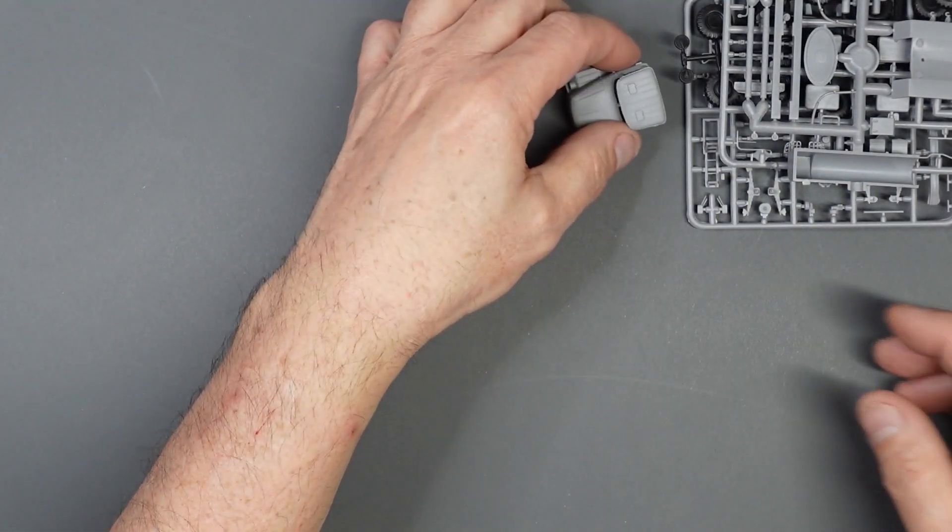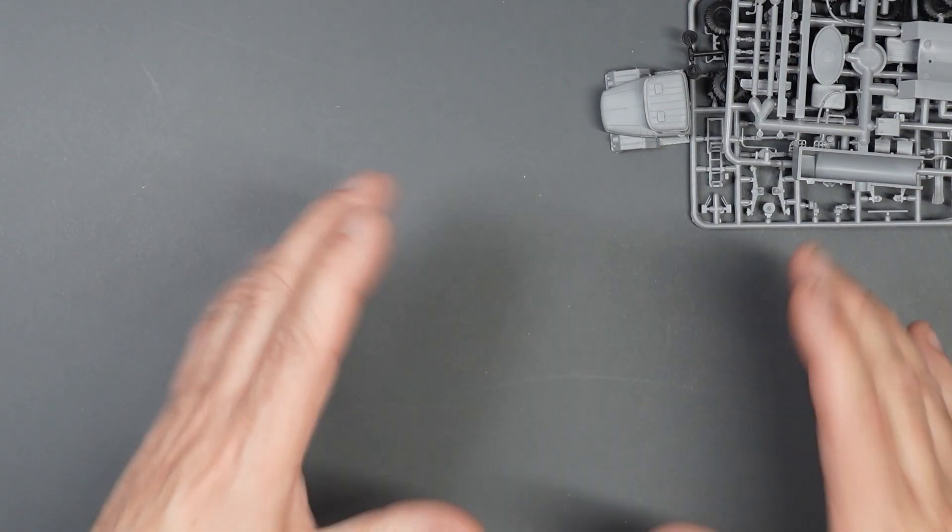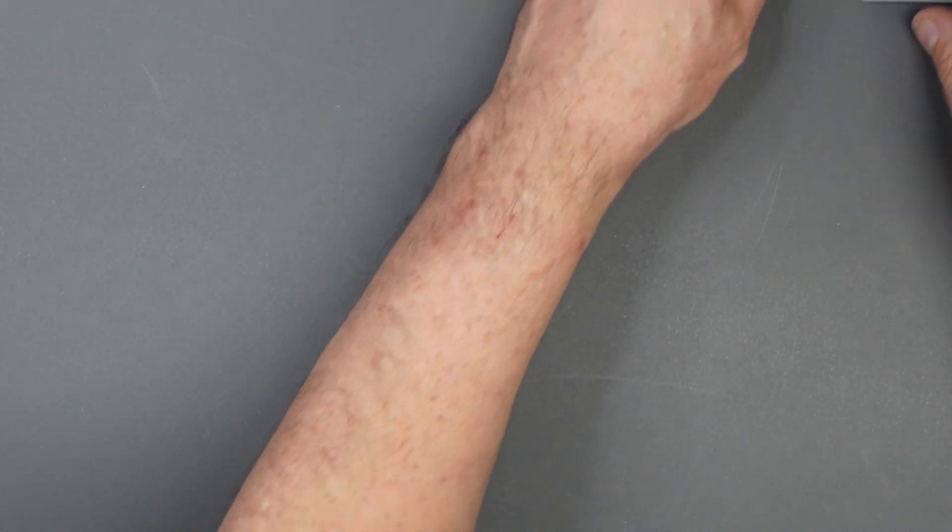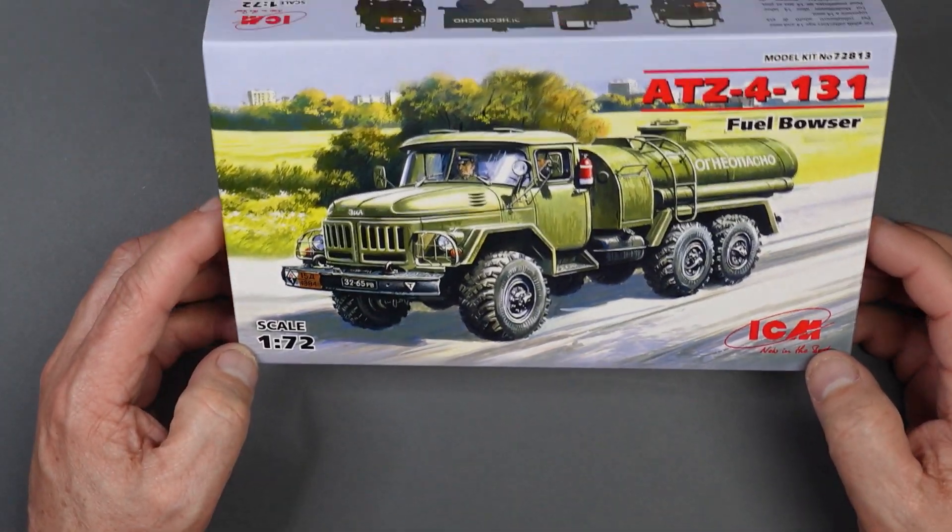And as I've said a million times before, having these trucks next to your aircraft in a little display, you don't have to do a diorama, but just have it plonked on a shelf, parked next to it. It just gives the aircraft a sense of scale. So that is the ICM 1:72nd scale fuel bowser.